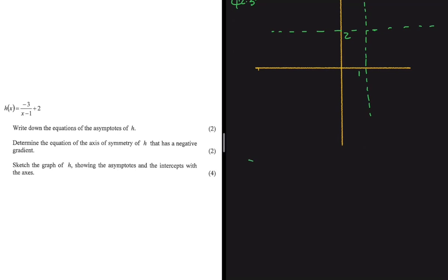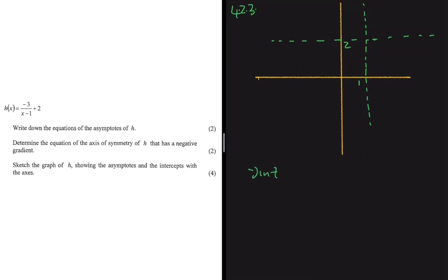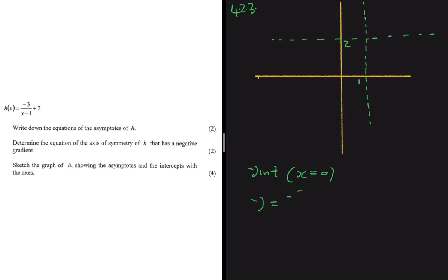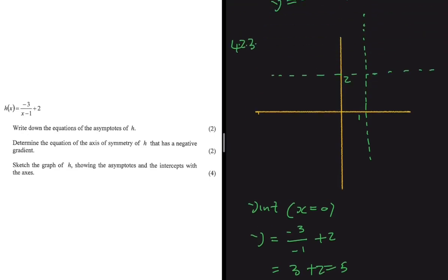For the y-intercept, we let x = 0. Substituting into h(x): y = -3/(0-1) + 2 = -3/(-1) + 2 = 3 + 2 = 5. So the y-intercept is at y = 5. We plot that point on the graph.